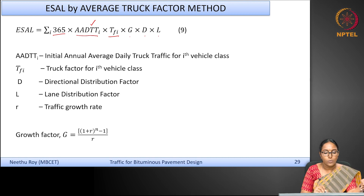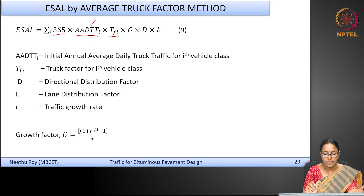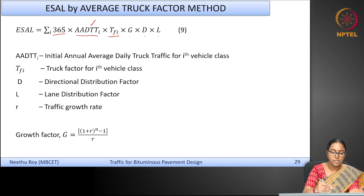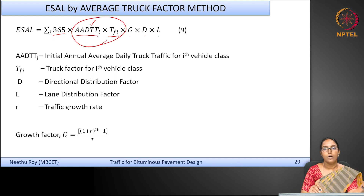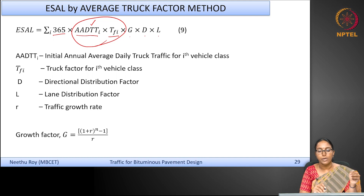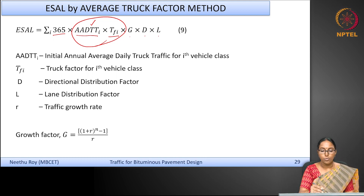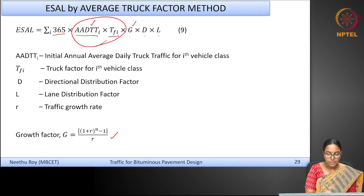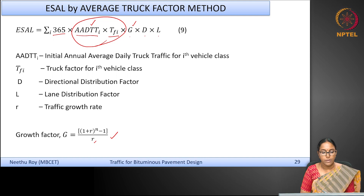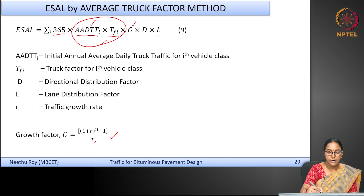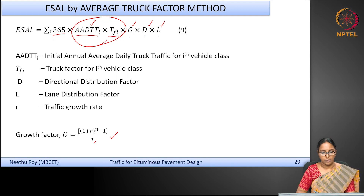For each truck type, you identify the annual average daily truck traffic and then multiply by the truck factor TF for that class to convert the number of trucks to equivalent standard axle loads. You multiply by 365 to get annual traffic, then by G — the growth factor, which is [(1+r)^n − 1]/r, where r is the traffic growth rate for that truck type. D is the directional distribution factor and L is the lane distribution factor. This is how total ESALs are computed using the average truck factor method.